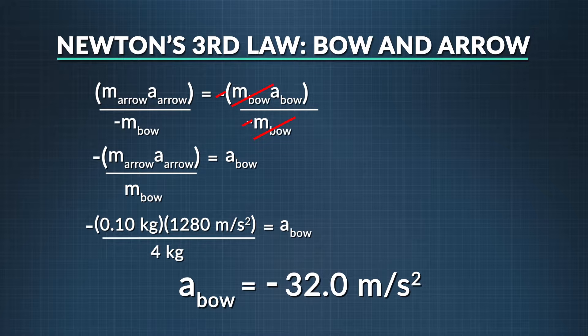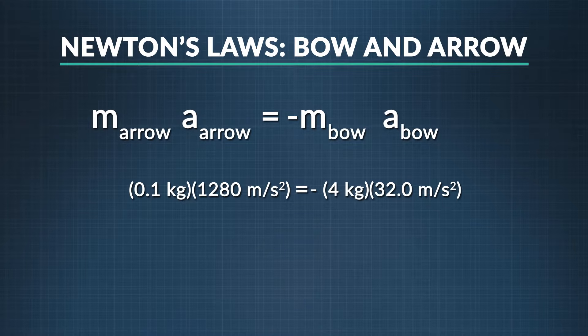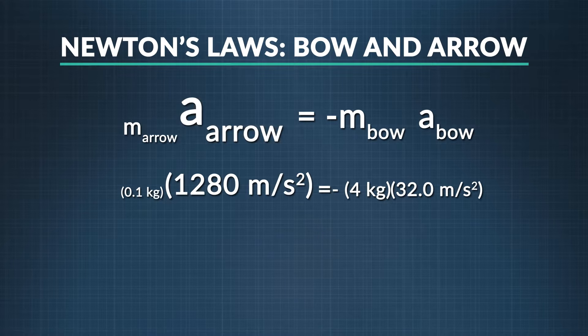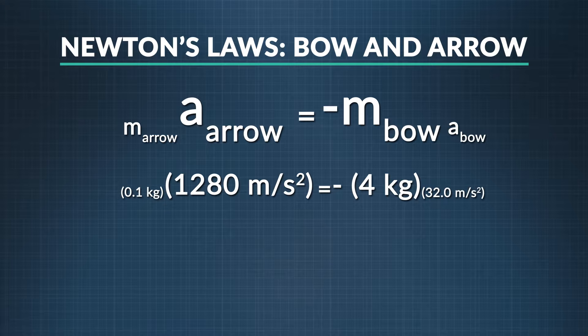Thus, the bow accelerates backwards at 32.0 meters per second squared. If the force of one thing acting on another is always equal in magnitude yet opposite in direction, then how does anything ever accelerate? Even though the two forces are equal in magnitude, one can accelerate more than the other because one can have a smaller mass, like the arrow when compared to the bow. The much smaller arrow accelerated at 1,280 m/s², while the much larger bow accelerated at a smaller amount — 32.0 m/s².